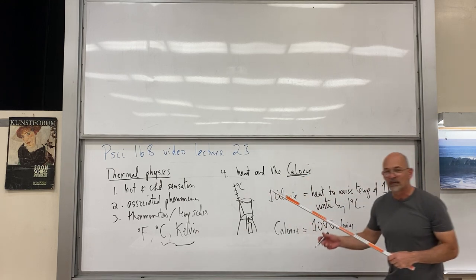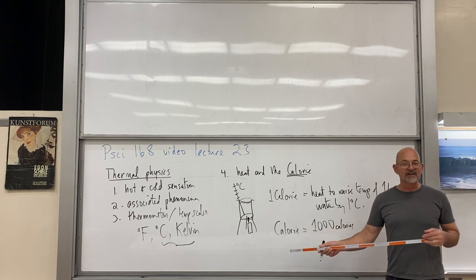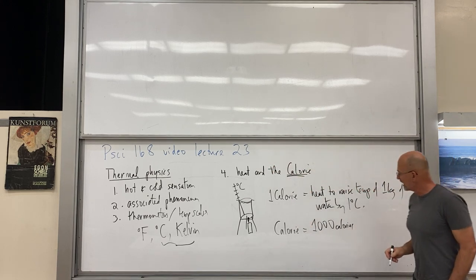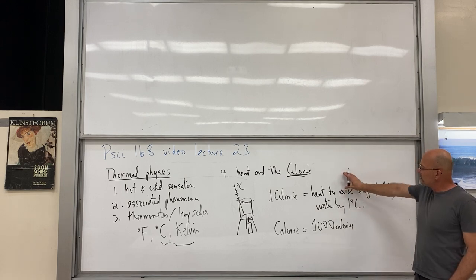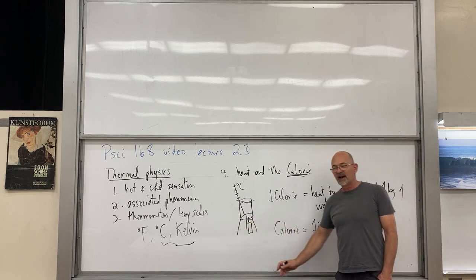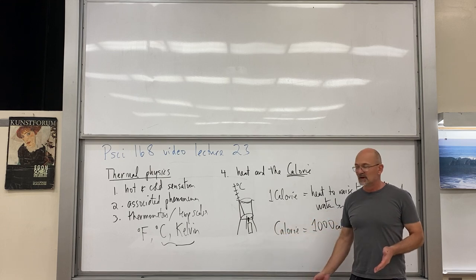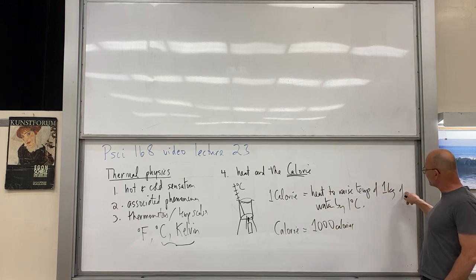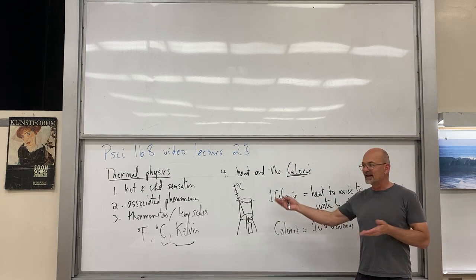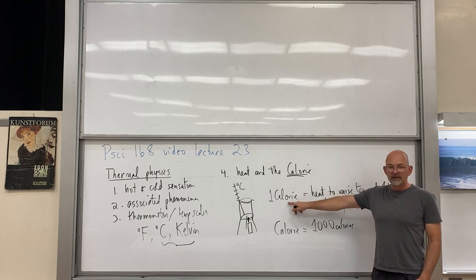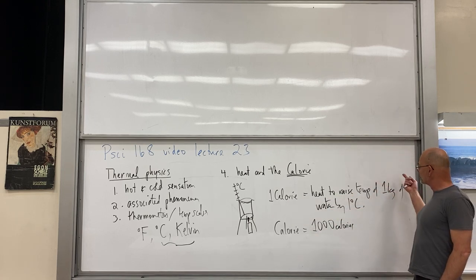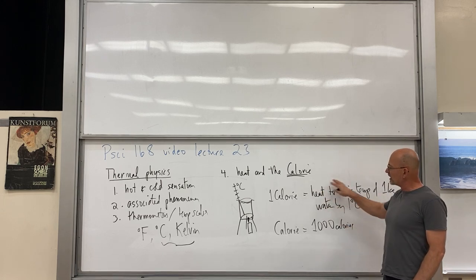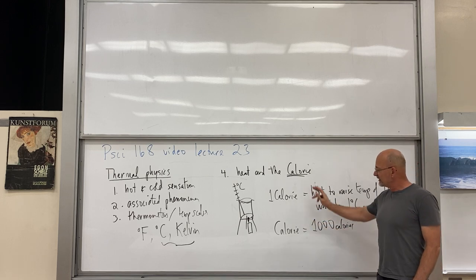A kilogram of water has a volume of one liter, so we have a perfect idea of what's going on. With this definition you can know how much fuel you need to raise the temperature of a barrel or bathtub full of water from one temperature to another. One calorie raises one liter of water by one degree Celsius. If you have a hundred liters and want to raise it to boiling — roughly a hundred degrees from 20 — you need the appropriate number of calories.